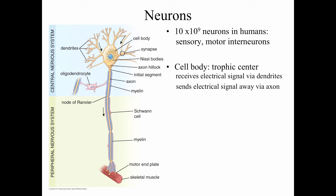The cell body is the trophic center of the neuron. The cell body is where electrical signals are received by dendrites, and then electrical signals are carried away from the cell body by way of the axon. Here it's just showing an axon synapsing onto a dendrite on the cell body. We can also talk about substances like Nissl bodies, which are essentially clumps of rough endoplasmic reticulum in the cell body.